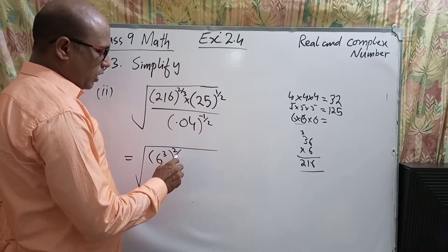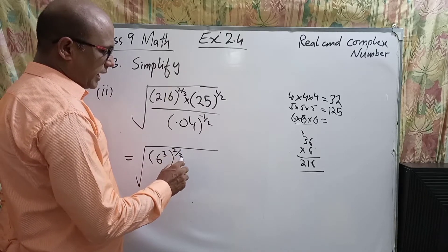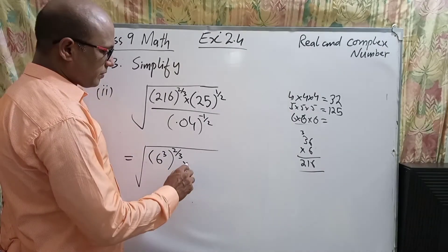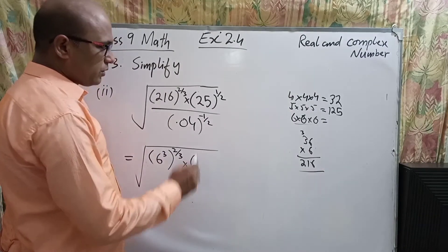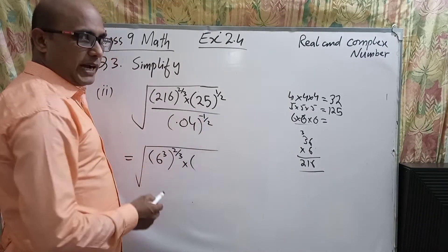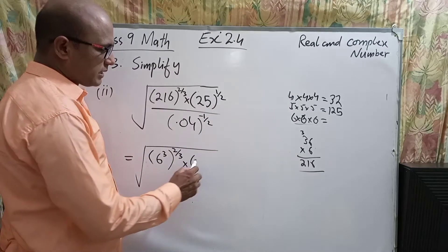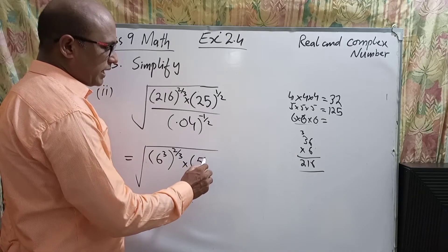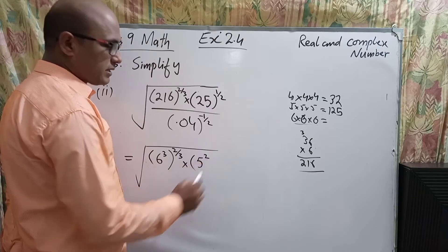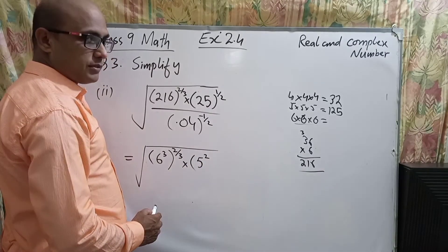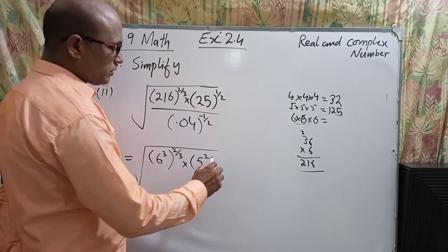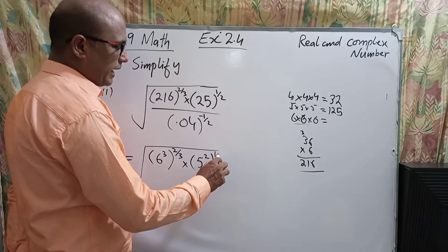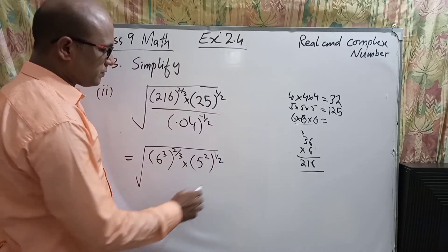Now, 25 is a simple number. We know that we can write it as 5 power 2, and the whole exponent is 1/2.